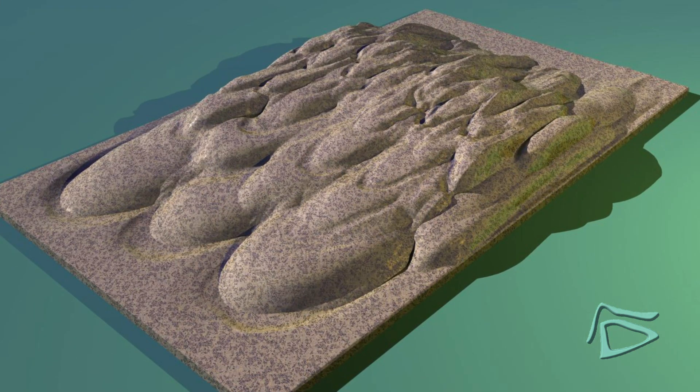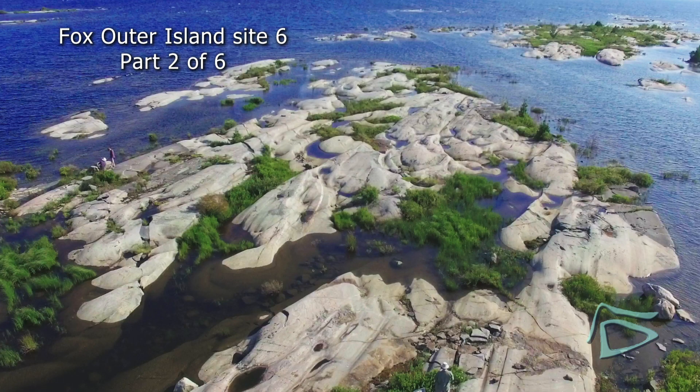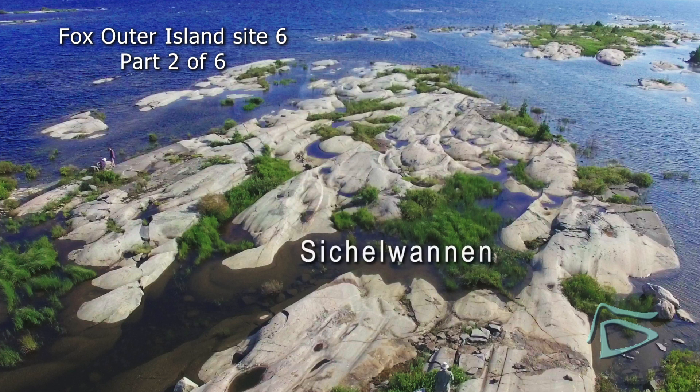We now look at another crescentic form, a sickle form. These forms occur in clusters representing organized structure in the flow. Site 6, Outer Fox Island, illustrates sickle-shaped forms, sichelwannen.